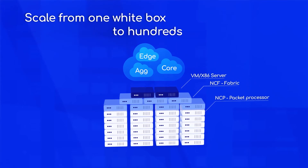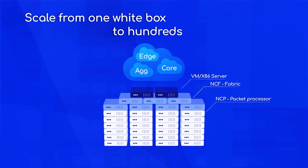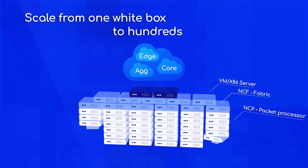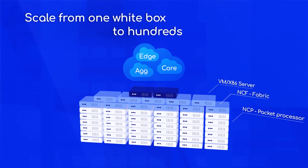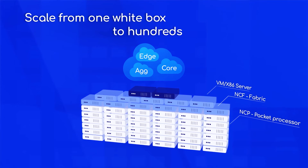A single NCP is a 4TB per second router, while clustering NCPs and NCFs together creates any size router up to 768TB per second. This creates a very flexible router model. And third is the cloud-native software, based on containers that are distributed across the white boxes, creating a single router entity.